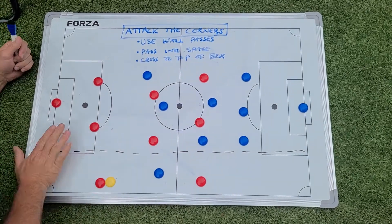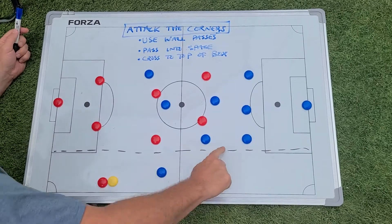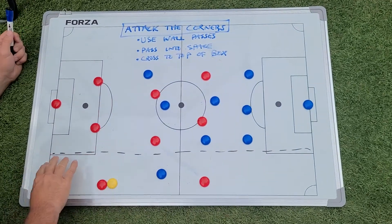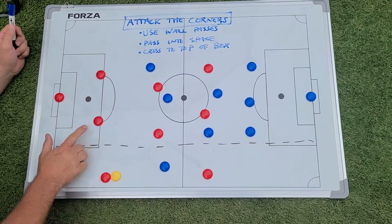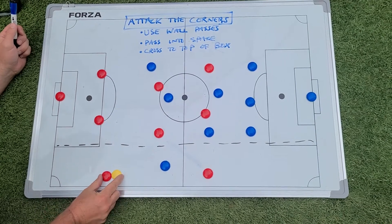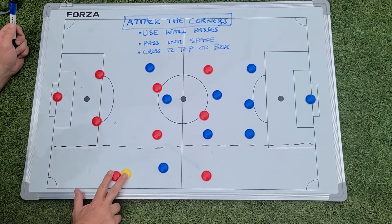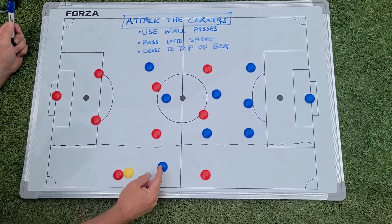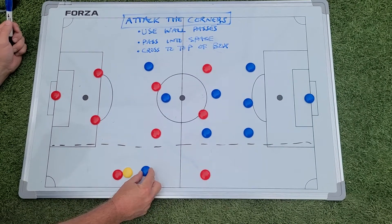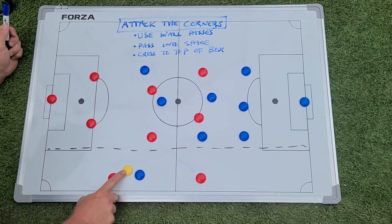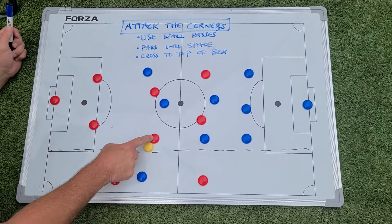We're the red team, and we're advancing on this goal. Notice I've got this dotted line, which is the sideline lane here. Our right defender has the ball and is advancing down the lane. It's very likely that this blue player is going to come and put pressure, in which case this defender can pass to our right midfielder.